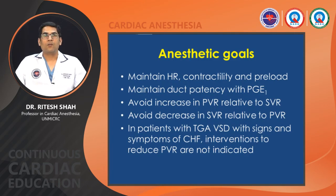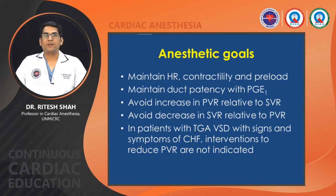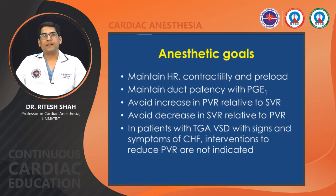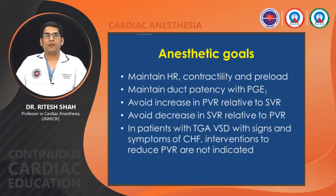Anesthetic goals include maintaining heart rate, contractility, and preload; maintaining duct patency with prostaglandin until the patient goes on bypass; and avoiding increases in PVR relative to SVR, as well as decreases in SVR relative to PVR. In TGA with VSD and signs and symptoms of failure, interventions to reduce PVR are not indicated.